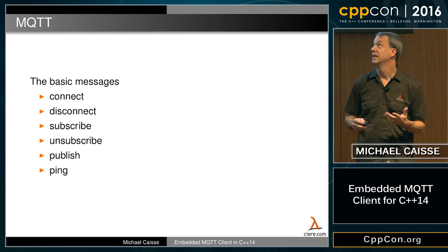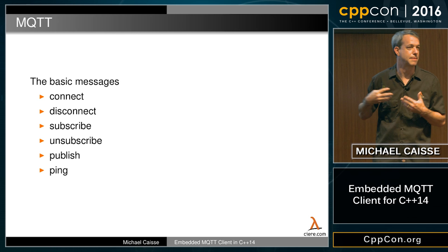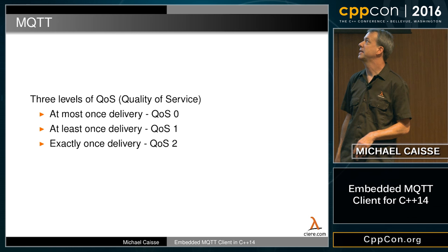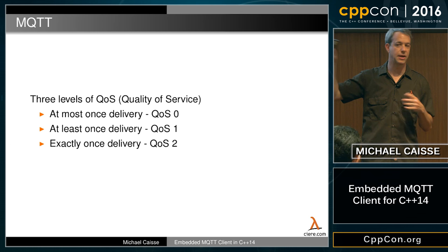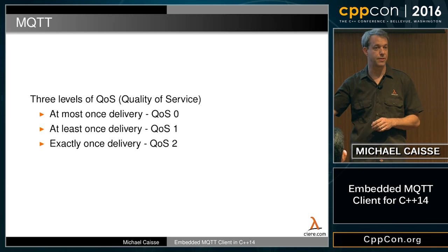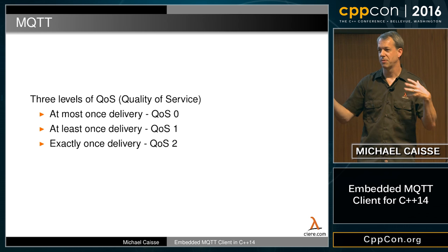Publish is sent from the client to the broker, and publish is also what's received by the client when a topic comes in — they use the same message for both sending and receiving. There are three levels of quality of service. QoS 0 is at-most-once delivery — send a message and don't care if it's acknowledged. QoS 1 is at-least-once — keep sending on a timer until you receive an acknowledgment, so the other end might receive more than one. QoS 2 is exactly-once, involving a complicated handshake to ensure only one delivery.